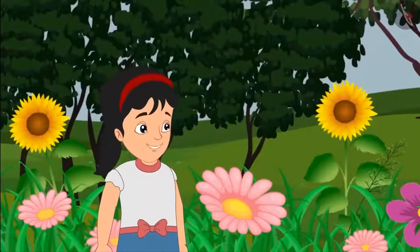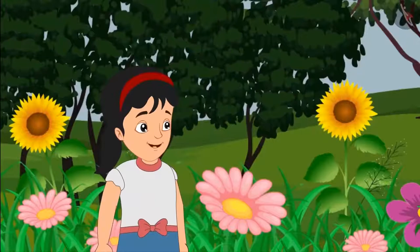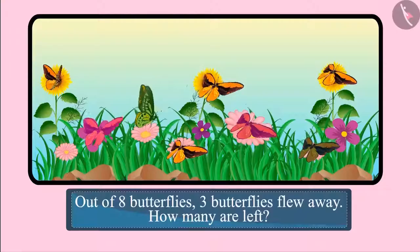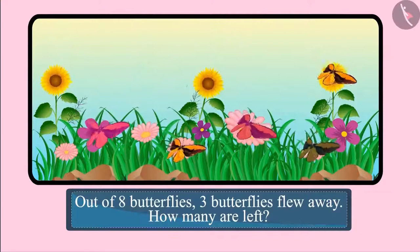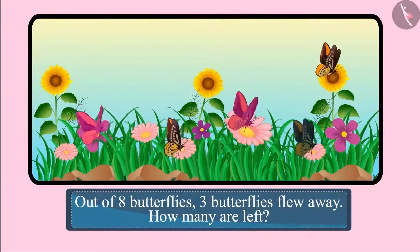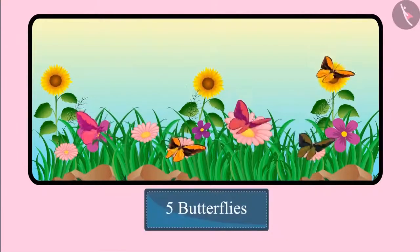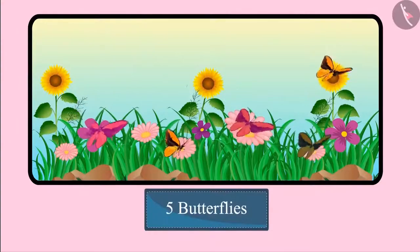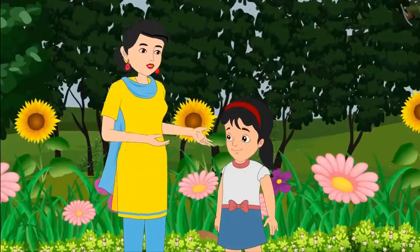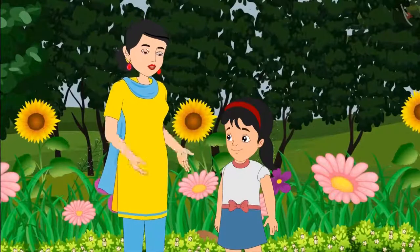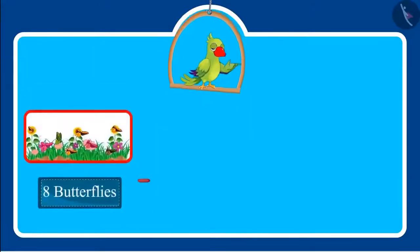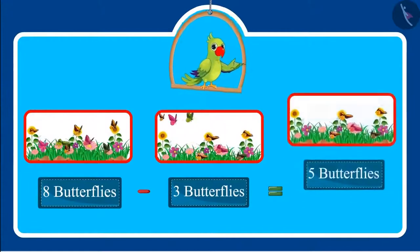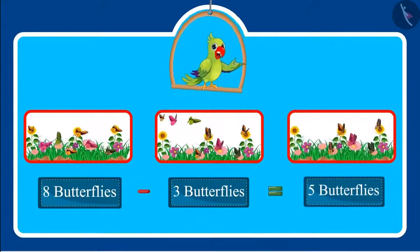Pinky goes a little closer to the flowers to see the butterflies more closely, and three butterflies fly away. Three butterflies flew away. Out of eight butterflies, three butterflies flew away, so how many butterflies are left on the flower? Five butterflies are left, mummy. Very good, Pinky. You are absolutely right. So children, you saw that if we subtract three from eight, then five is left.